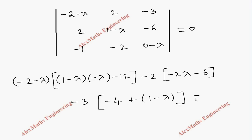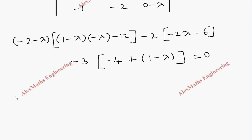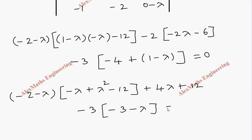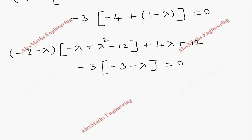This is all equal to 0. Expanding further: the first term stays as is, then multiplying out gives minus lambda plus lambda squared minus 12. Then multiplying minus 2 inside gives plus 4 lambda plus 12. For the last term, minus 3 times the bracket which contains minus 4 plus 1, giving minus 3, then minus lambda, equal to 0.